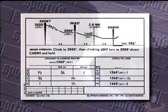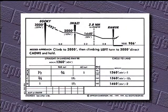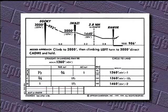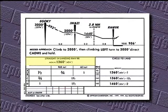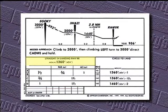Before going on, let's get some terminology straight. When talking about minimums for non-precision approaches, we have both a minimum descent altitude and a minimum descent height. The altitude is what you see on your altimeter. The height is the number of feet you are above the touchdown zone when flying at the minimum descent altitude.